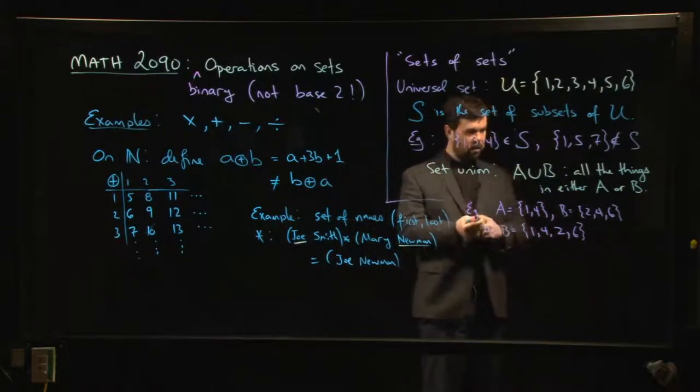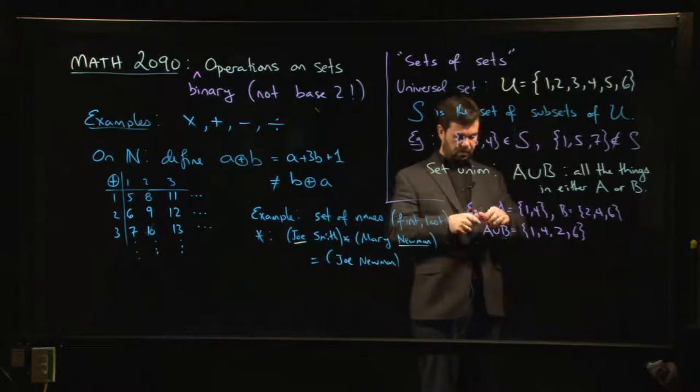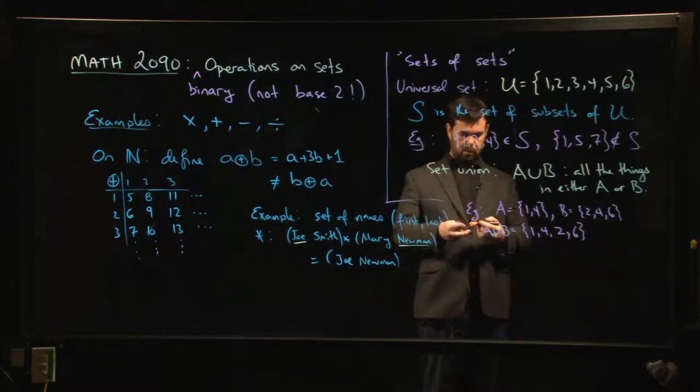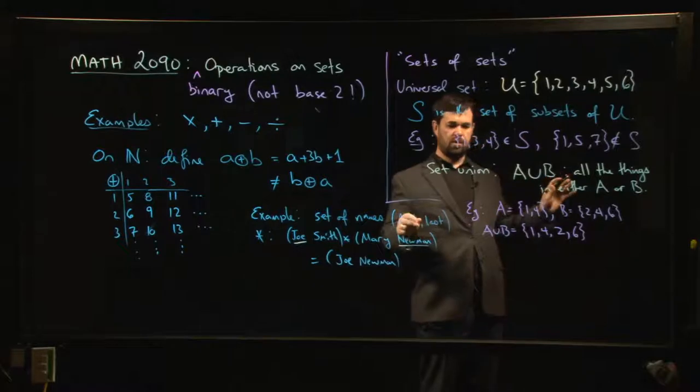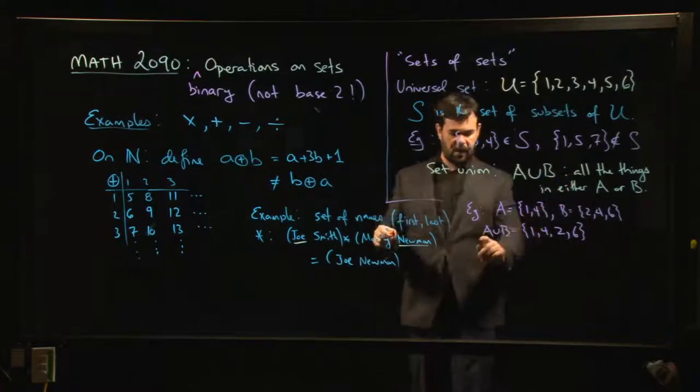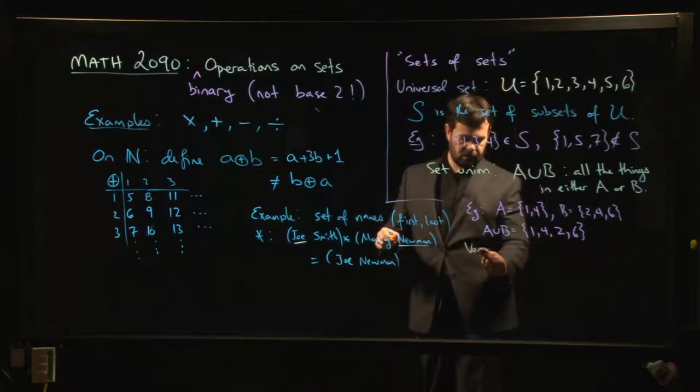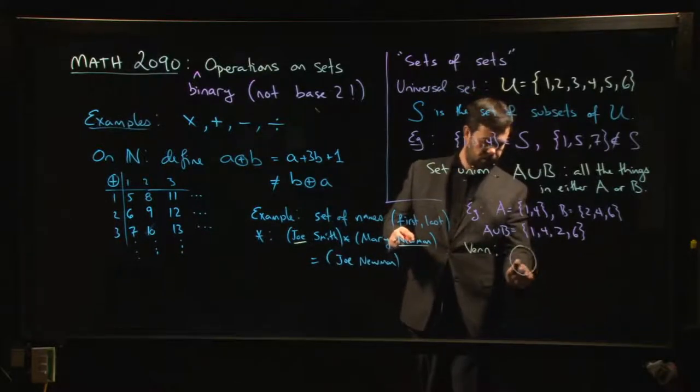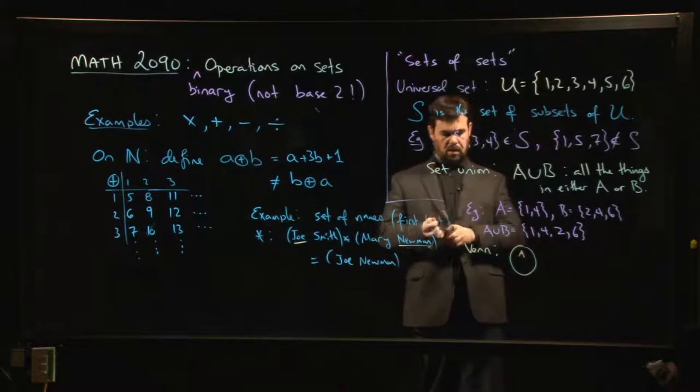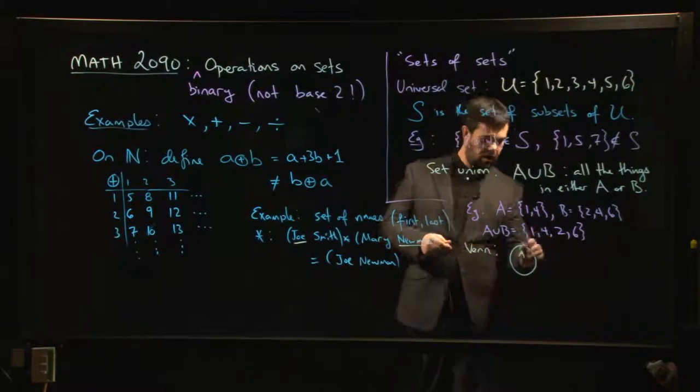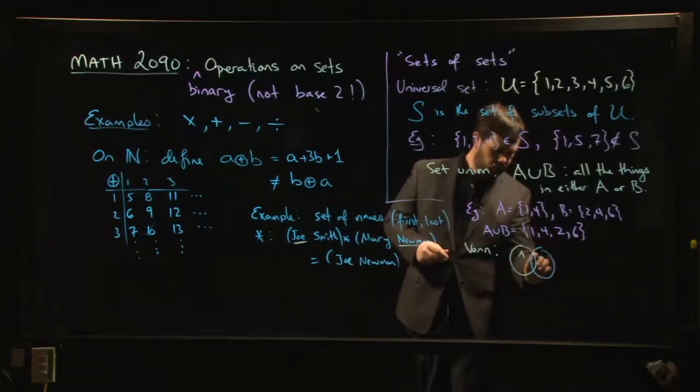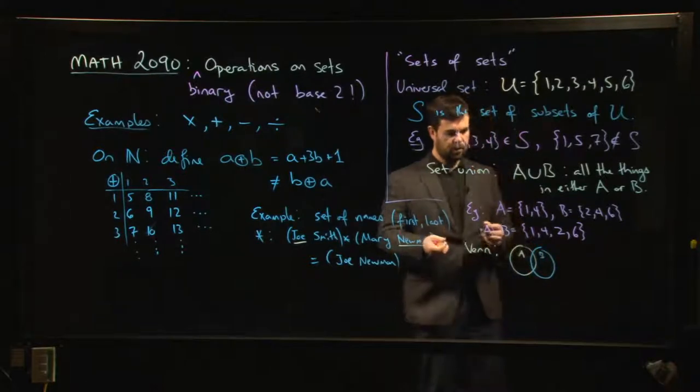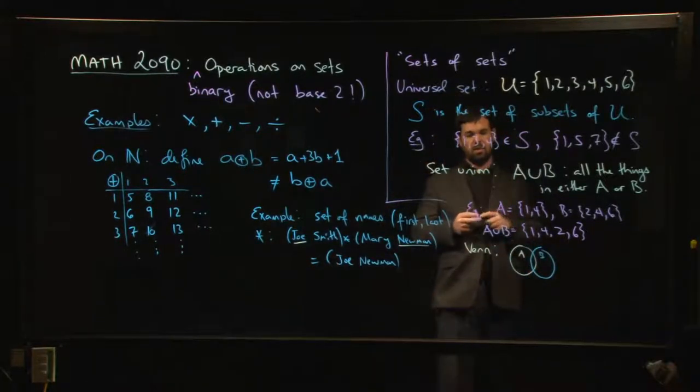One of the ways that you might picture this - and this is something that a lot of people will like to think about - you can bring in these Venn diagrams. So the Venn diagram in this case, you kind of have A, and maybe you draw B.